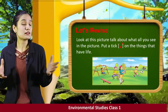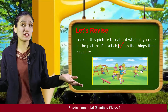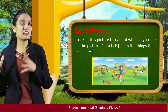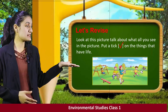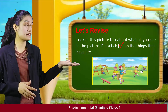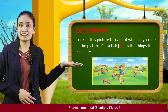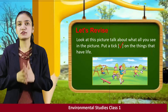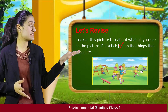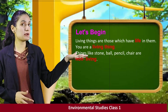So let's revise. Look at this picture. Talk about what all you see in this picture. Put a tick on the things that have life. You can see many things in this picture — kids playing around and many things they have. You have to tick on the things which have life, that is those things that are living. So now let's begin.